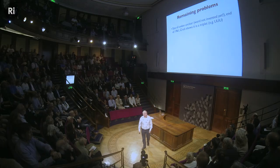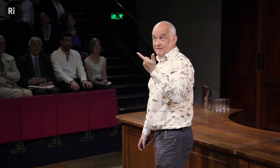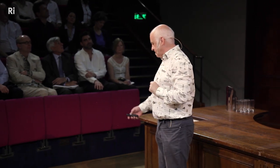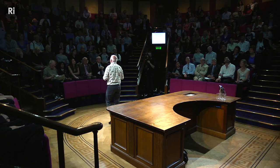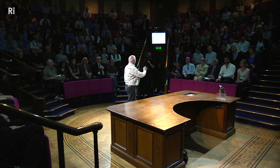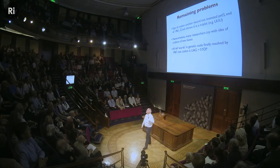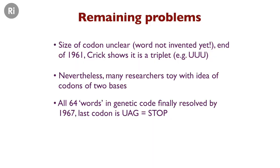Everything wasn't over then — there were still big problems. The size of the codon — that's the word that hadn't been invented yet — the size of the genetic unit, how many bases, hadn't yet been proved to be three, as it in fact is. Crick more or less proved it was a multiple of three by the end of 1961. Still, people carried on wondering, and a lot of very hard biochemistry remained — no more clever maths and physics, just hardcore biochemistry done in the mid-1960s. By the end of 1967, the final word had been written: UAG, which means stop. Here we've got UUU coding for phenylalanine, and UAG coding for stop.